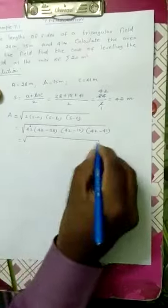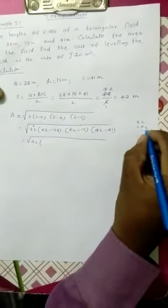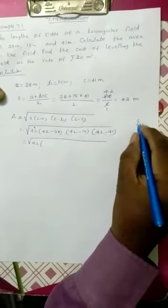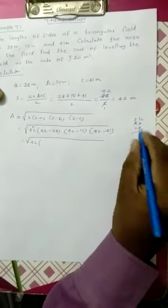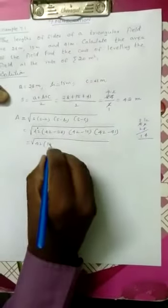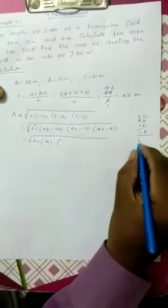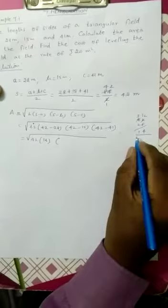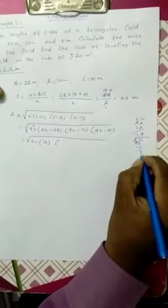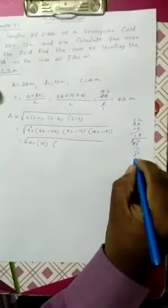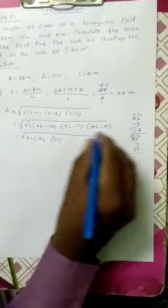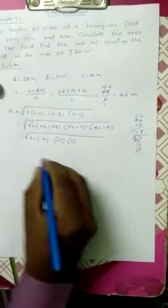So, the square root of 42 times (42 minus 28). Subtracting: borrow from the tens place, 12 minus 8 equals 4, giving 14. Next, 42 minus 15. Borrowing: 12 minus 5 equals 7, 3 minus 1 equals 2, giving 27. Finally, 42 minus 41 equals 1.